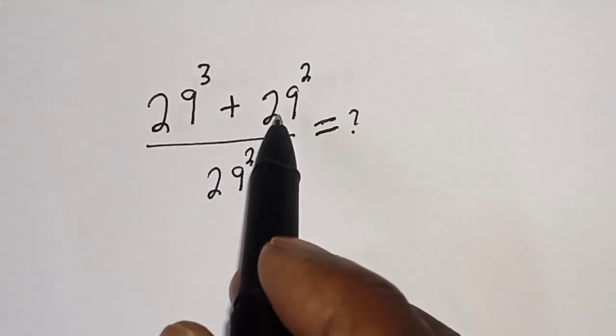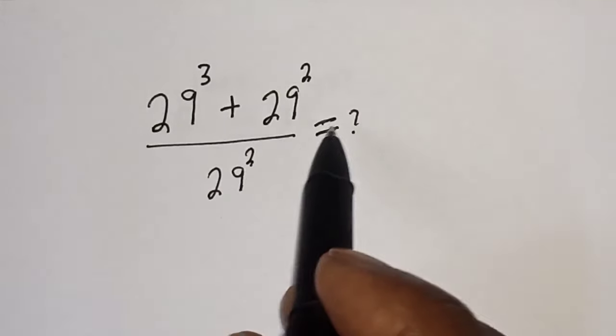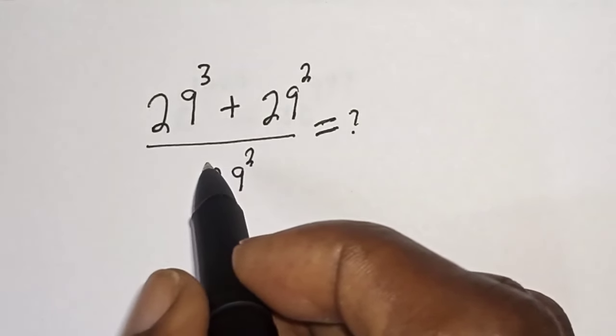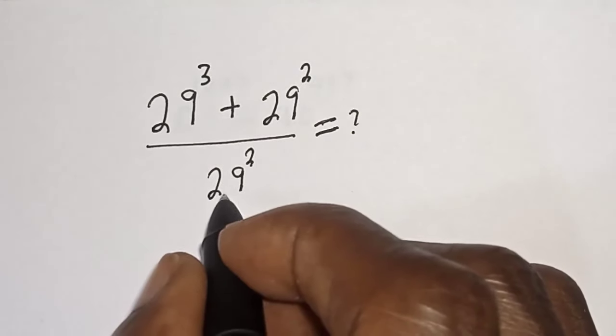29 raised to power 3 plus 29 squared over 29 squared equals what? Hi everyone, welcome to my class. In this class we want to simplify this math problem, but before we proceed, please don't forget